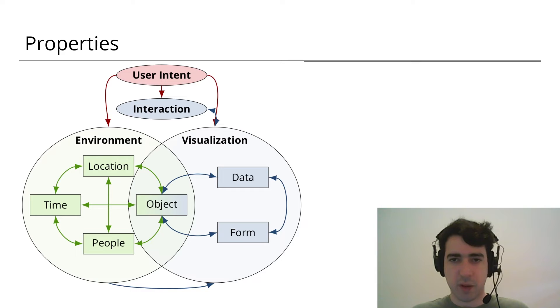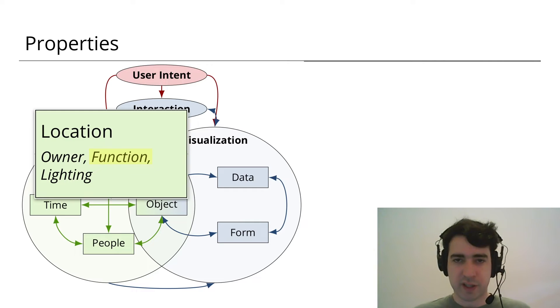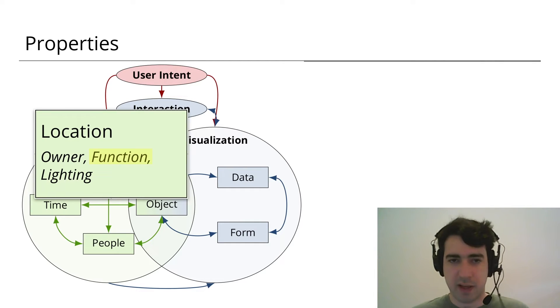Each factor has a set of properties describing specific aspects of the factor. Location has properties like owner, function, and lighting. Function represents whether the location is a kitchen space, a bedroom space, a bathroom space, and so on.